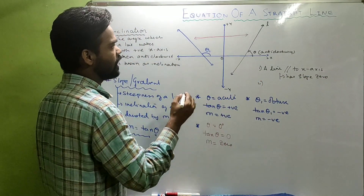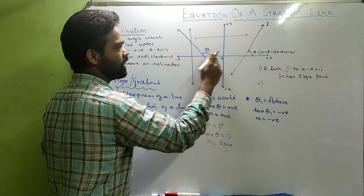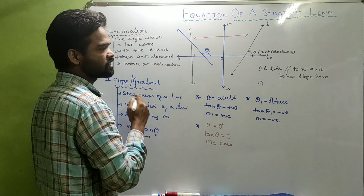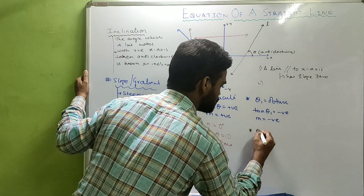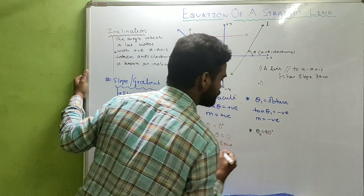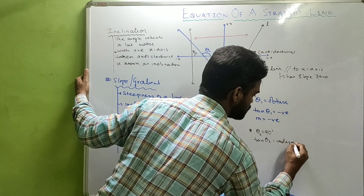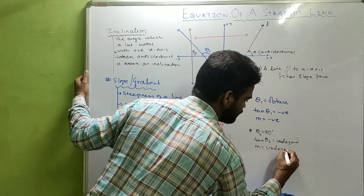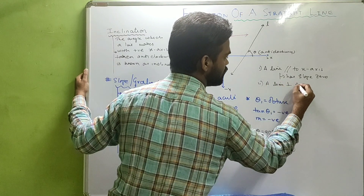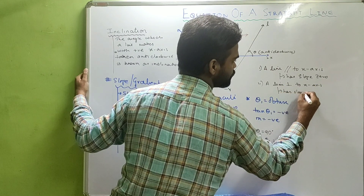If you draw a line perpendicular to the x-axis, theta is 90°. Tan 90° is undefined, so the slope can be undefined. A line perpendicular to the x-axis has undefined slope.